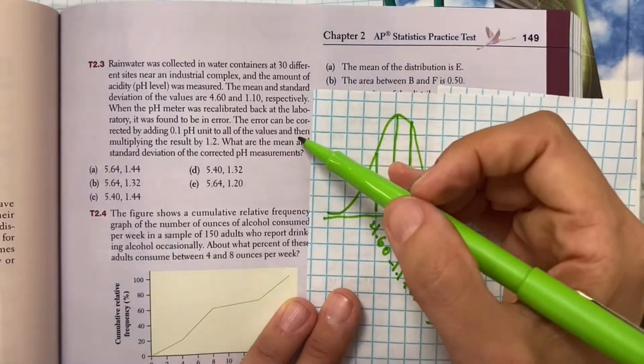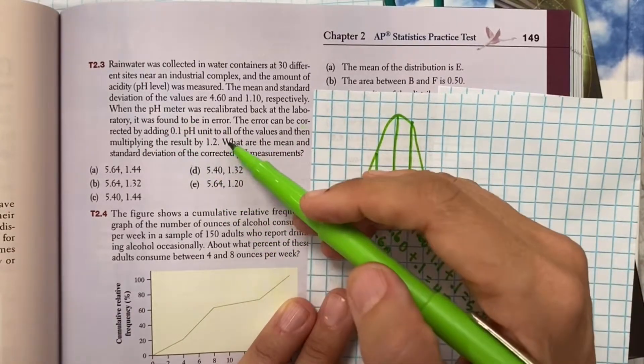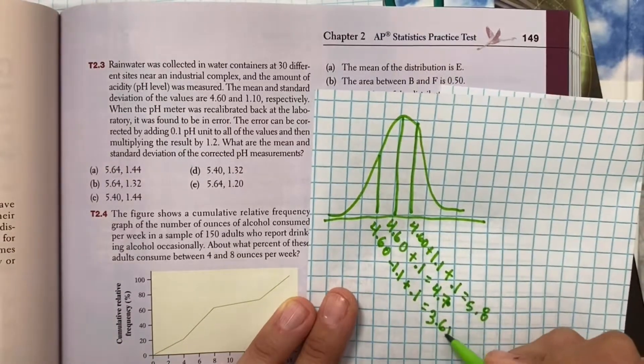Now, it says, if it was recalibrated, they actually found it was an error. The error can be corrected by adding 0.1 to all the units. So we can just do that manually. We're going to fix it. So if we fix it, the new labels on our picture are 4.7, 3.6, and 5.8. Now it says, but the error didn't just include adding all of these values. We also need to multiply by 1.2.